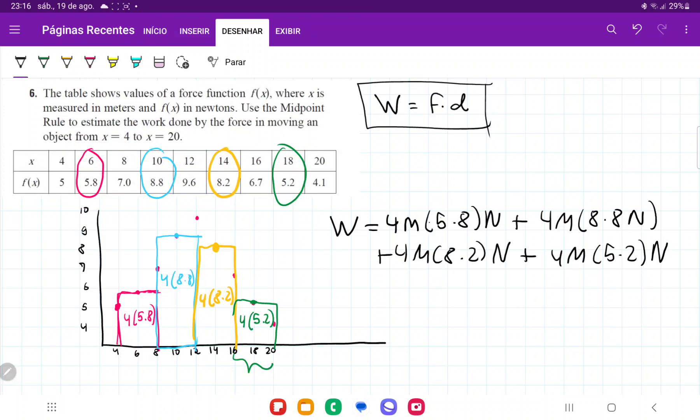Let me put this in my calculator. 5.8 plus 8.8 plus 8.2 plus 5.2, and then this times 4. This is going to give us 112 joules.